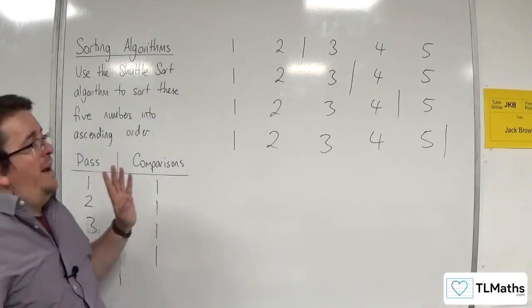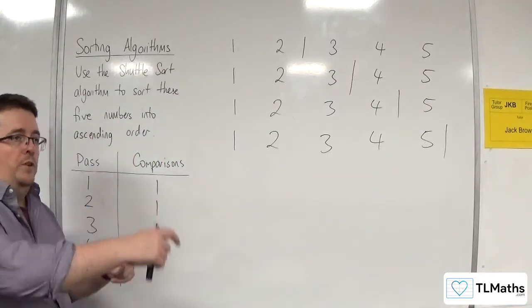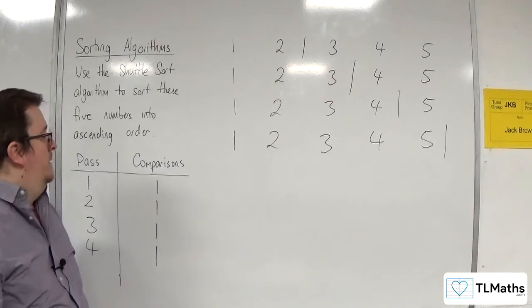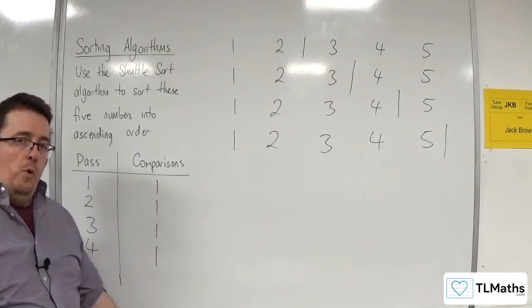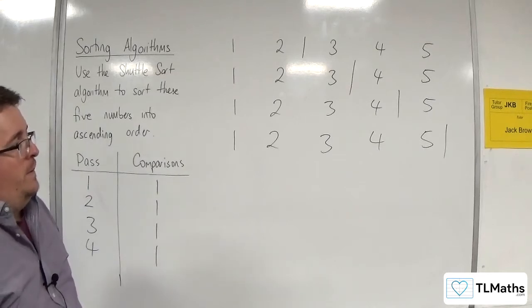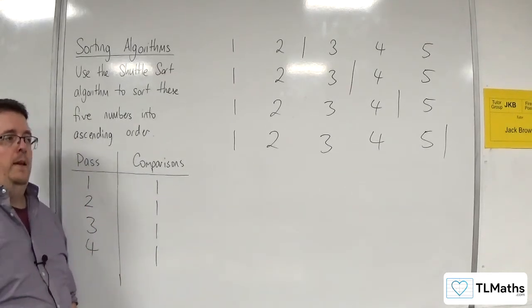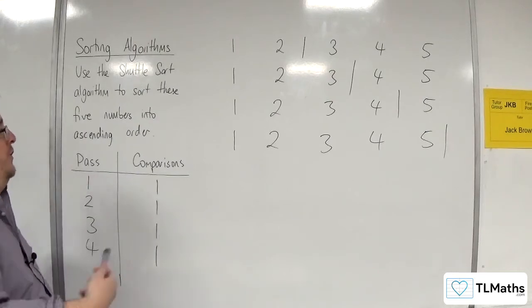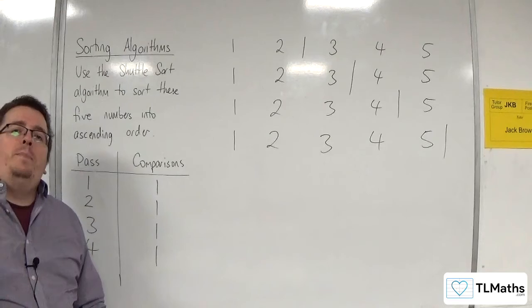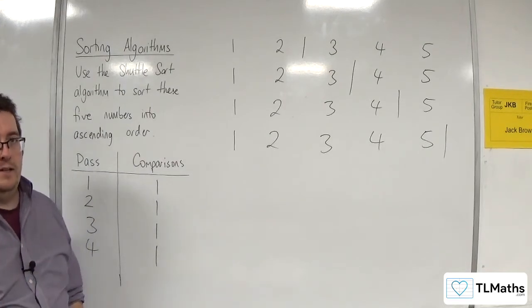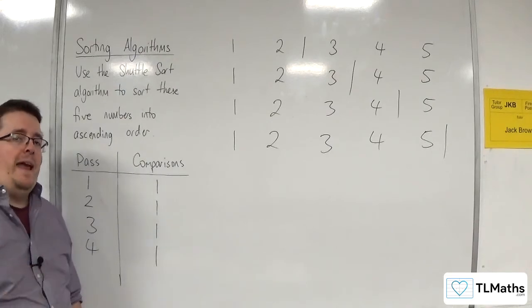So if this had been a list of n numbers, then the total number of comparisons would be n minus 1. That's telling you that if the list is already in ascending order and you need to use the shuttle sort, then it would be order n complexity. So the total number of comparisons would be n minus 1.